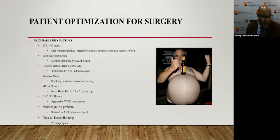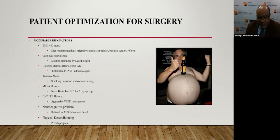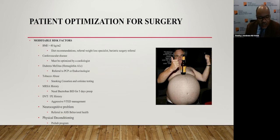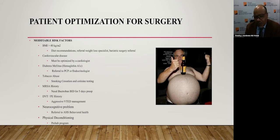Modifiable risk factors: for a BMI over 40, we have diet recommendations, referral to weight loss specialists, and as a last resort referral to the bariatric surgeon. Cardiovascular disease must be cleared and optimized by the cardiologist. For diabetes mellitus, we refer to an endocrinologist and try to get the A1C down to appropriate levels. If they're smokers, we recommend smoking cessation — and if the patient is an unreliable historian on that, we can get cotinine testing, which is quite accurate. If we have MRSA history on nasal swab or previous infection, we recommend nasal Bactroban twice a day for five days pre-op, plus chlorhexidine wash for five days pre-op. For history of DVT or PE, we have aggressive DVT and PE prophylactic management. For neurocognitive problems, we refer to behavioral health, and for physical deconditioning, we recommend a prehab program.